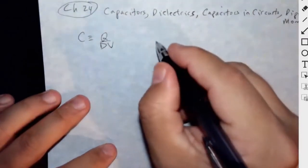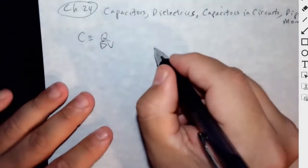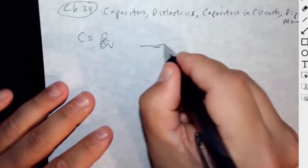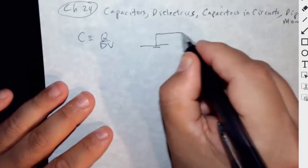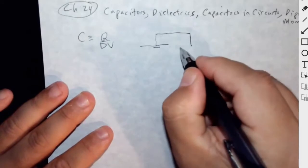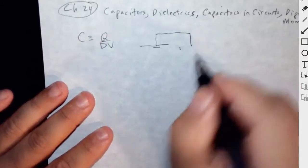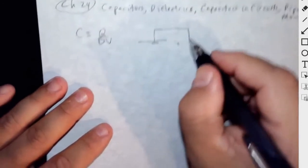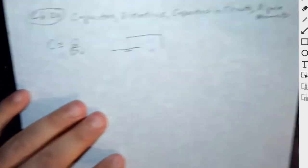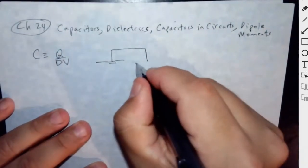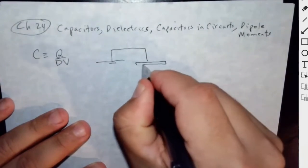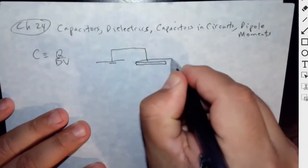The idea of capacitance — the way that it's made — is you take a battery and you charge a plate. The generic picture of a capacitor is two parallel plates, but they don't always have to be parallel plates. So it looks like this: two parallel plates.